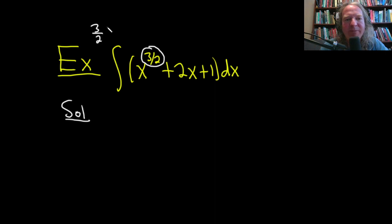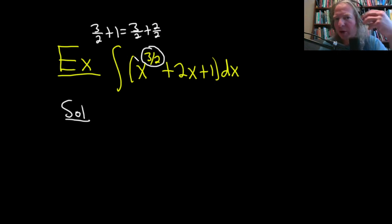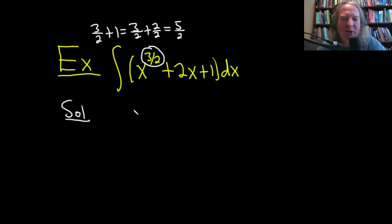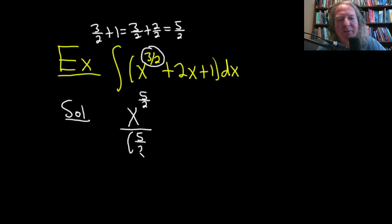So 3/2 plus 1 is the same as 3/2 plus 2/2, and 3 plus 2 is 5, giving us 5/2. We write x to the 5/2 and then divide by 5/2.